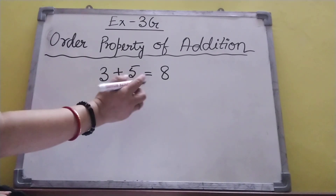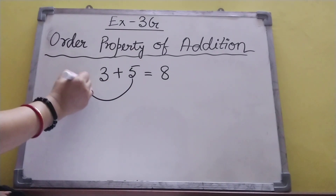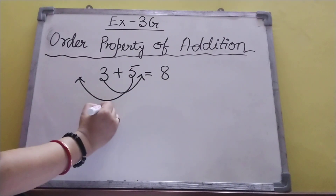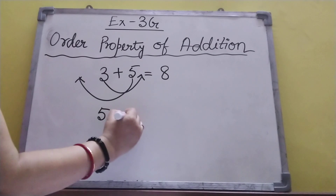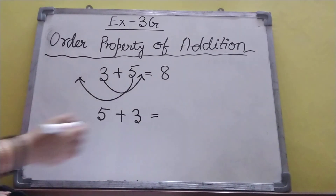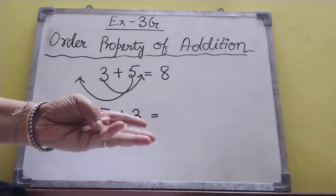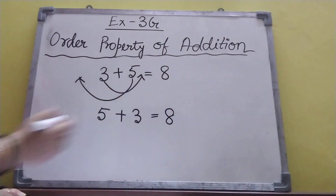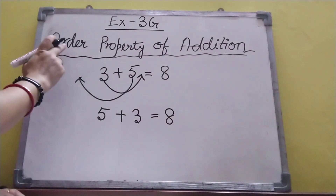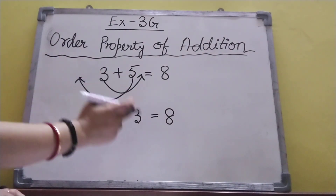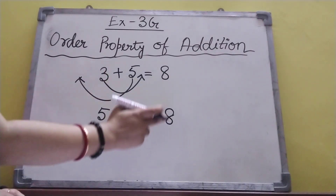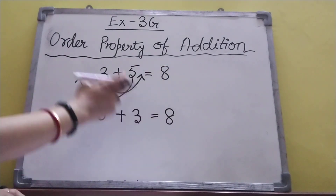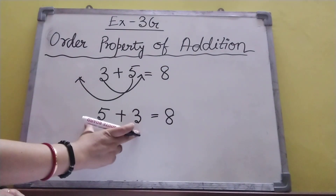Now I am going to change the order. Five will come here and three will go here. So five plus three is equal to — again five, three is here — five, six, seven, eight. Answer is eight. In order property, when we change the order, result will always be the same. So we can write: three plus five equal to five plus three.